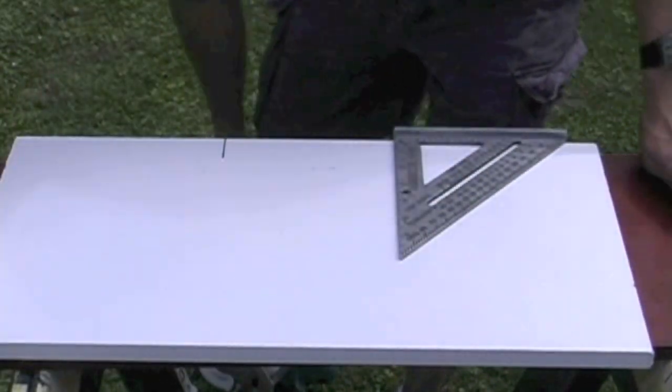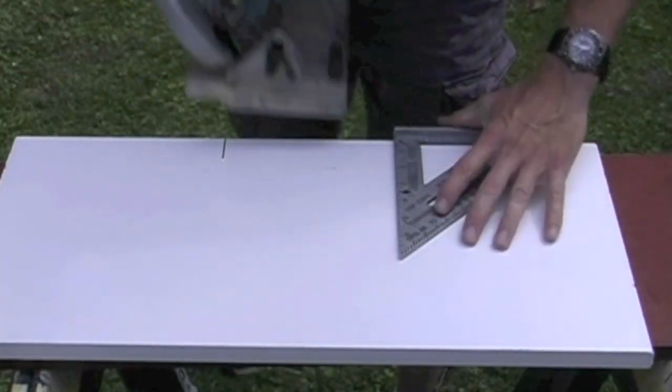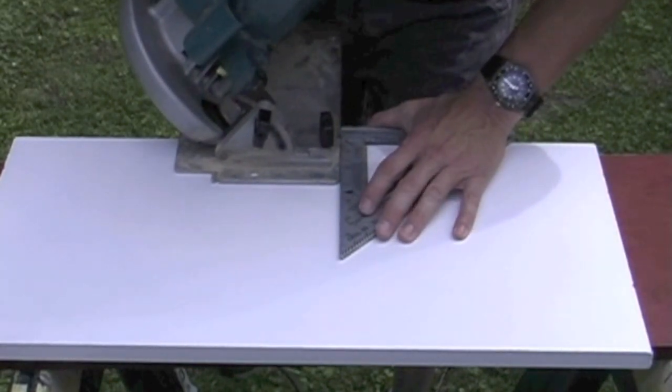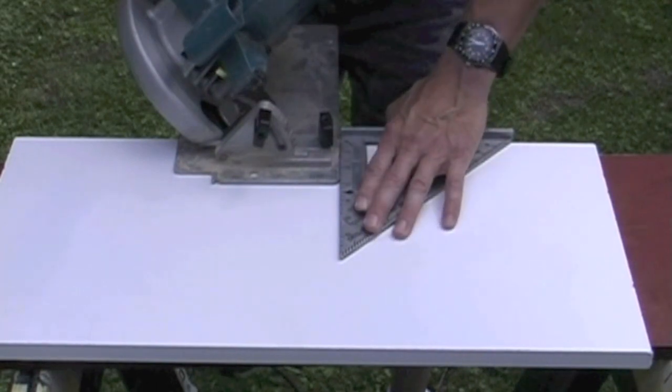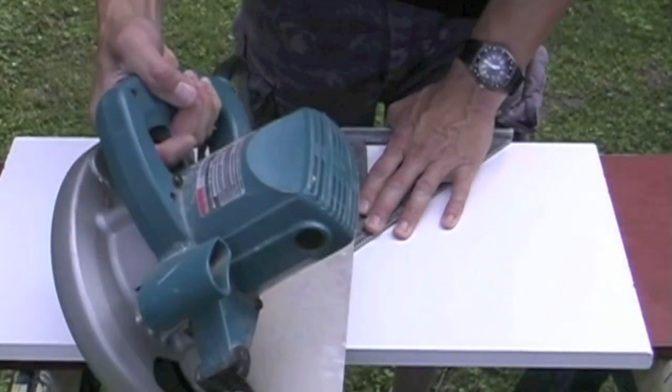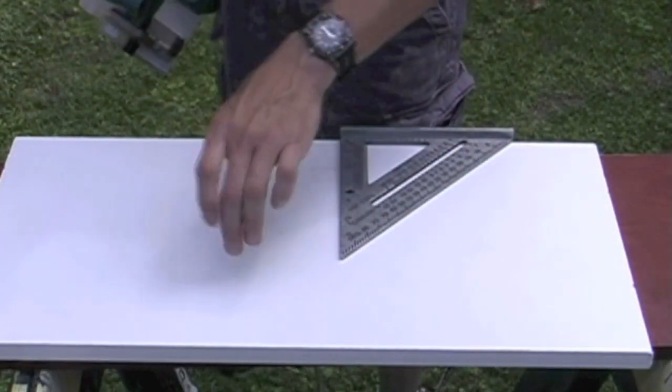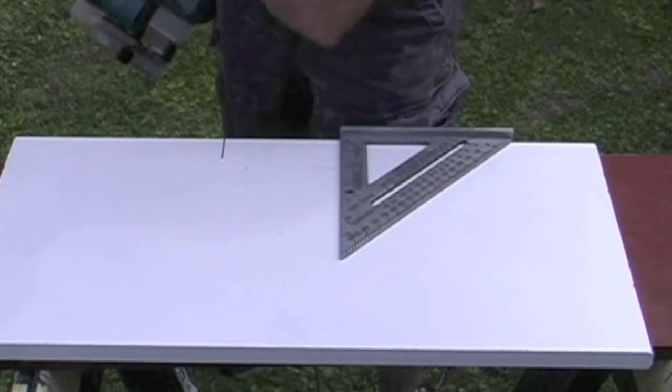And then I'm going to take my saw and line my blade up with that line, and now I have a guide right here that's going to keep me perfectly straight, so I can make a good clean cut on a miter and match two pieces of wood like this very easily.